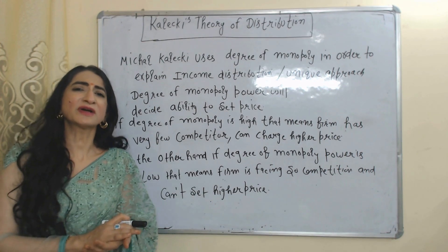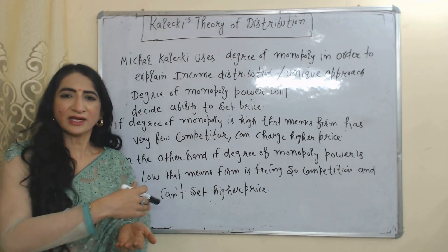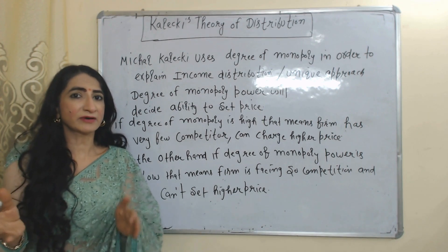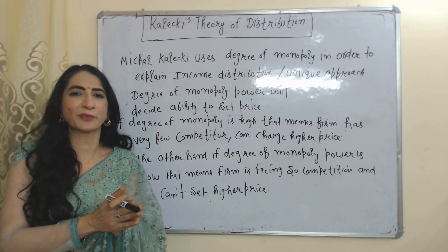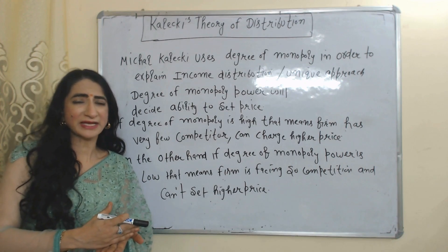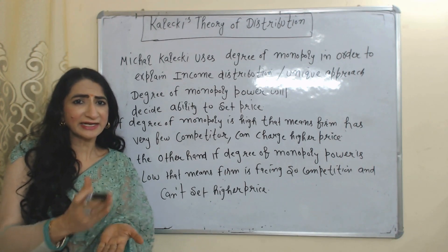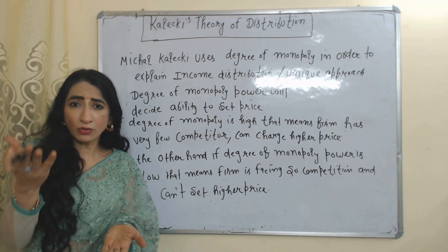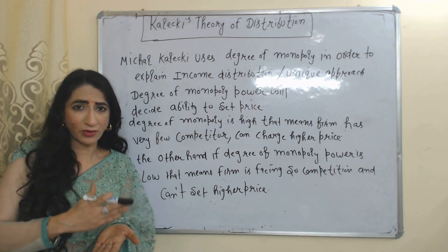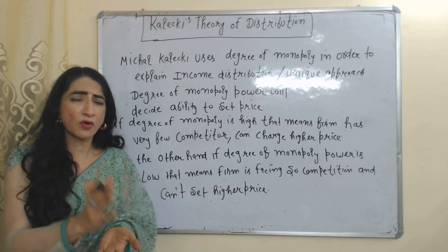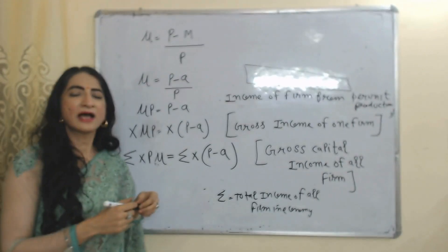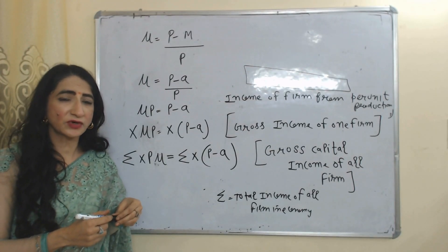According to this theory, the degree of monopoly power will decide the ability to set price. If the degree of monopoly power is high, that means the firm has very few competitors and it can set a higher price. On the other hand, if the degree of monopoly power is very low, the firm is facing so much competition in the market and it cannot set a higher price.